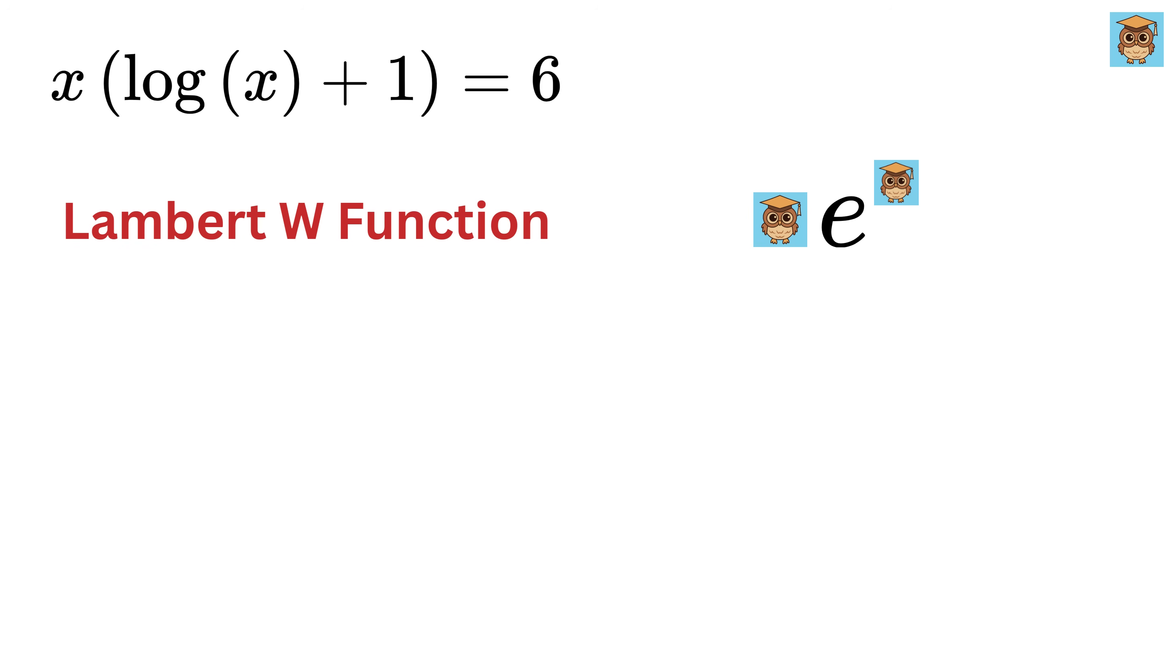It doesn't matter what we write here. So you apply the W function around this expression. The result will simply be equal to omega. This is the beauty of Lambert W function.